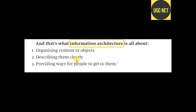The second point is describing them clearly. After organizing, we have to describe content clearly. Using the supermarket example: if you go to the kitchen grocery section, you should find crockeries, food items, masala, and so on. Each area must be described clearly so users know what they will get at that particular location.